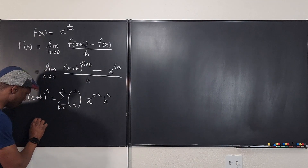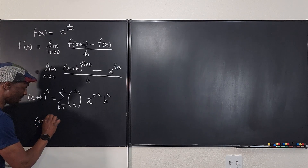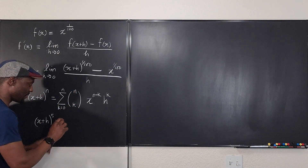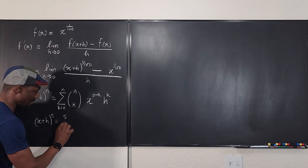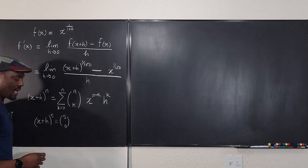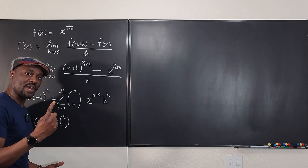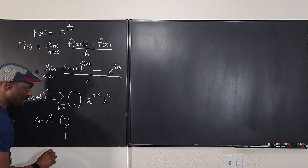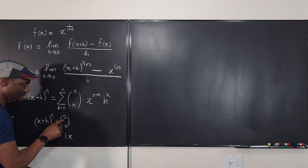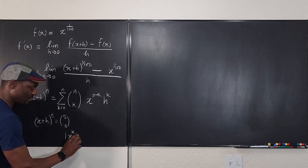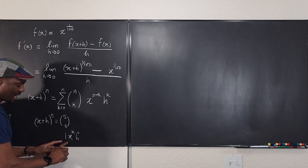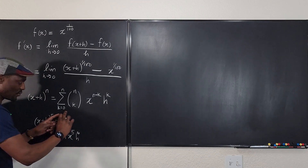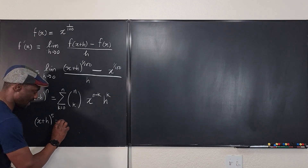Let's take a very easy example. Suppose I want to expand x plus h raised to power five. The first term will have the coefficient five choose zero — in how many ways can you choose nothing from five? There's only one way. So that coefficient is one, and the term is one times x to the power five minus zero, times h to the power zero, which is just x to the fifth. So the first term is x to the fifth.